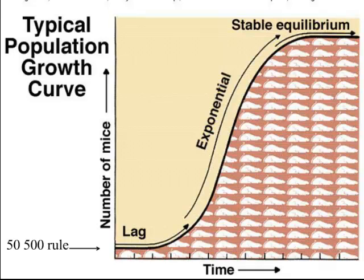The graph starts where there's the 50/500 rule. Because if we have no individuals in the population, there is no population. If you take a sealed container with no mice in it and watch forever, you won't end up with mice — they don't spontaneously pop into existence. To start a population, you have to start with a minimum number. Most people say you have to have two.